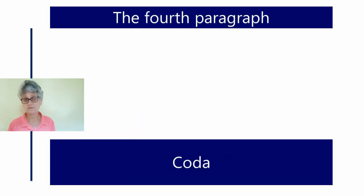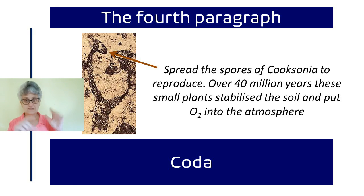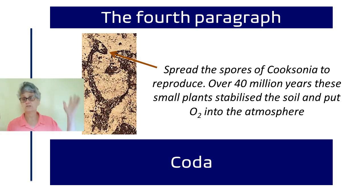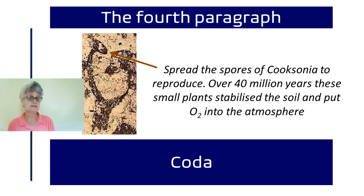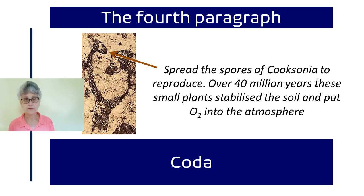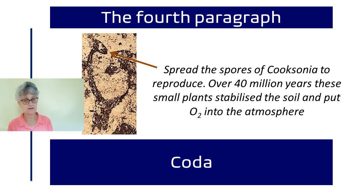The fourth paragraph tells the reader the coda — what this all means. These little disks at the top of the stalks of Cooksonia — which was only very little — put out spores that allowed Cooksonia to reproduce further away from itself. These spores made new plants, and these plants gave oxygen to the air and stabilized the soil, creating the conditions, Taylor and O'Day say, over the course of 40 million years for the evolution of other plants and other animals.